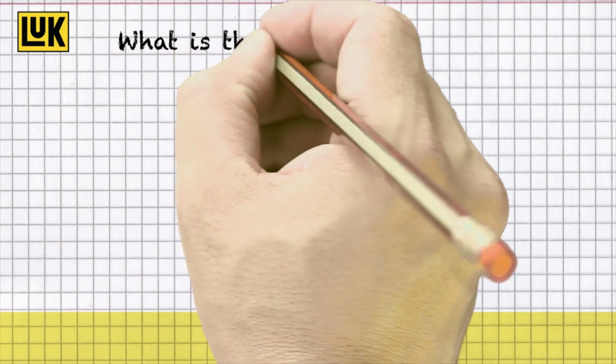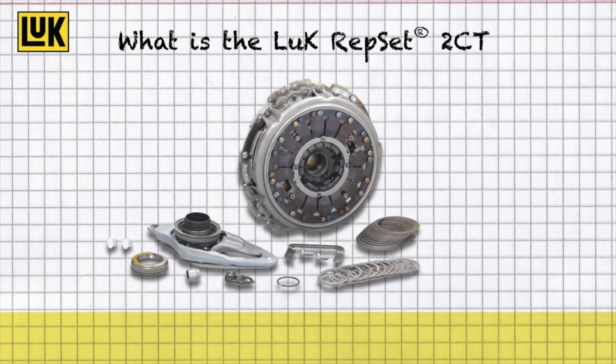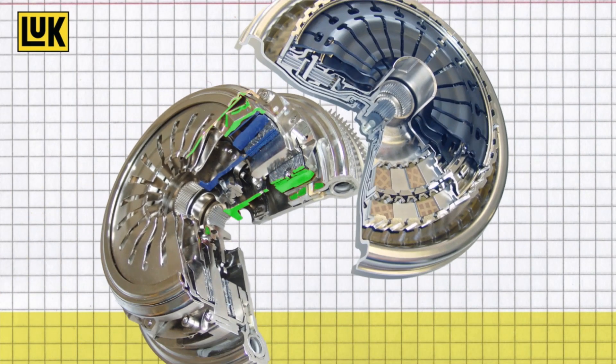What exactly is the Luk Repset 2CT? The Luk Repset 2CT is a unique repair solution for dry double clutches. But what's a double clutch?